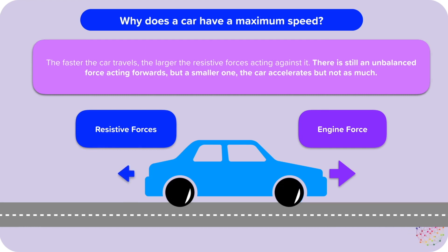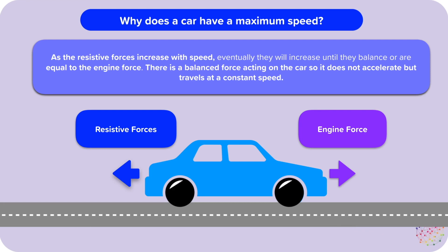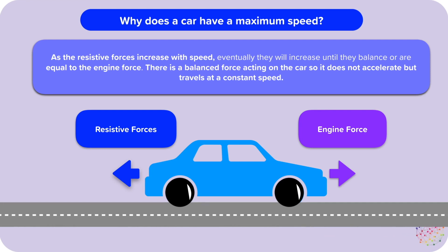But the faster the car travels, the larger the resistive force acting on it. That's because air resistance and friction from the road increase with speed. This means that the size of the unbalanced force decreases. There still is one — the engine force is still larger than the resistive forces — but the unbalanced force is less, so the car still accelerates, it's still getting faster, but by not as much.